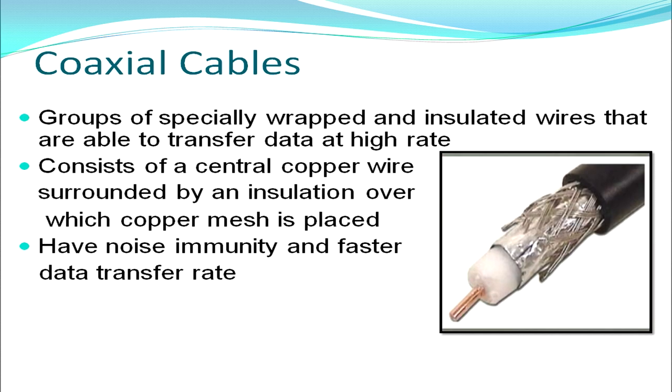Next is coaxial cable — a better transmission medium. It has specially wrapped insulated wire that can transfer data at a high rate. Since the wires are insulated, the problem of noise and interference is eliminated. The central copper wire is surrounded by insulation above which a copper mesh is present, giving very good noise immunity and a faster data transfer rate. It is very commonly used in long-distance telephone communication and for LANs.